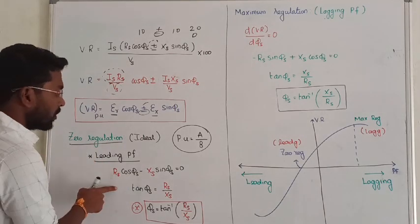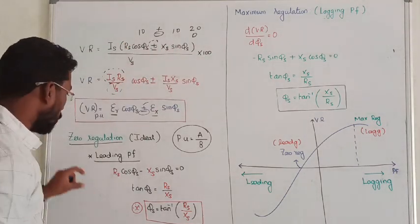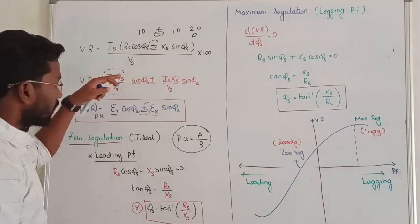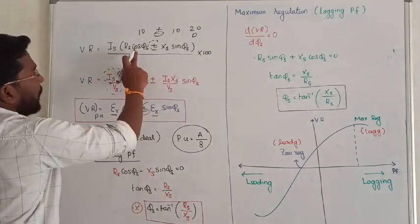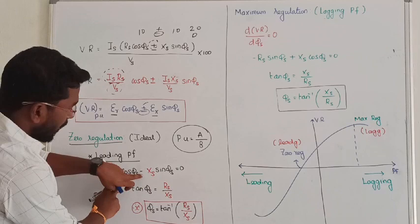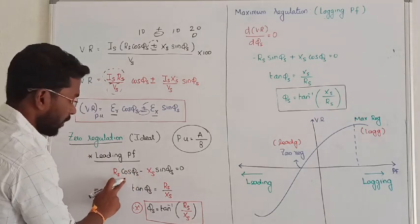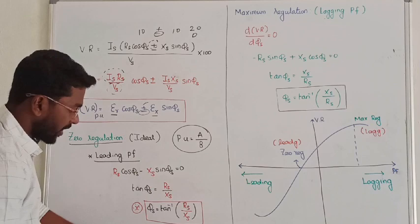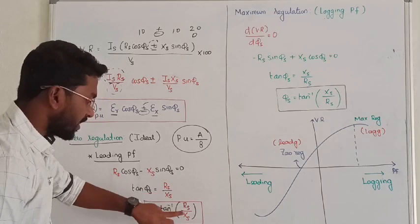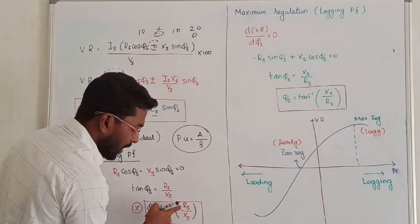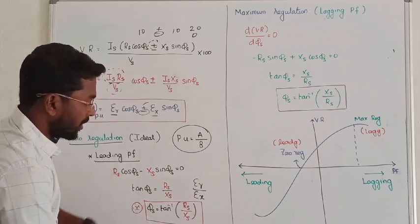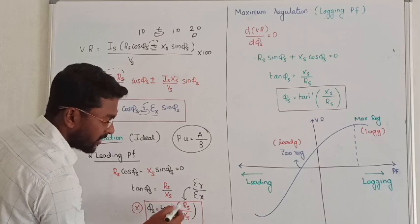Don't forget. Next, when we set per unit voltage regulation equal to zero, and differentiate — per unit resistive drop times cos φs minus per unit reactive drop times sin φs equals zero. From this I can say we are getting only the negative — the per unit value of Ys equal to Rs by Xs, or we can say φs equals tan inverse of Rs by Xs. So using resistance and reactance values, or resistive drop per unit divided by reactive drop per unit, you can apply this formula.